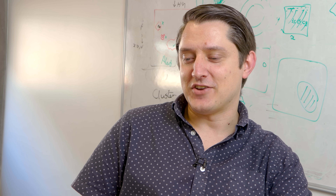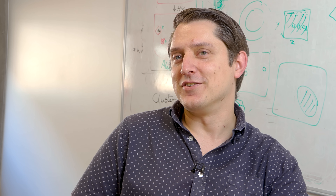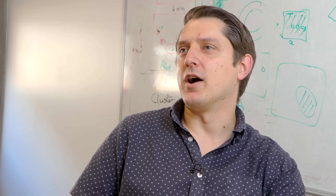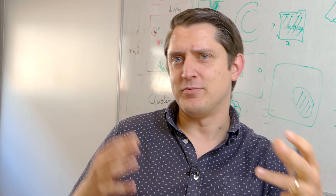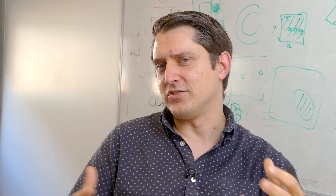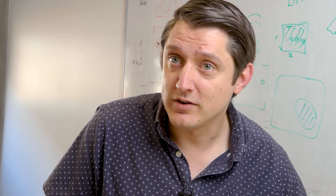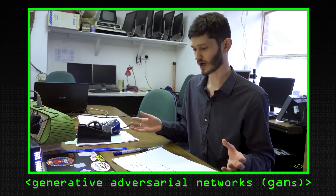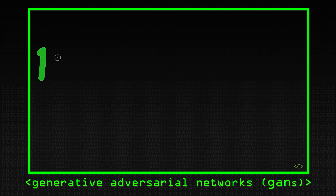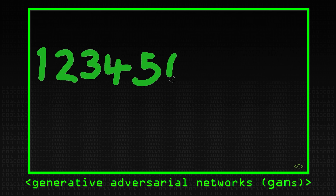I delved into this code and realised there's actually quite a lot to these things. It's not so much that they're complicated, it's just there's a lot of moving parts. So let's just have a quick reminder of generative adversarial networks, which are, before now, the standard way for generating images, and then we can talk about how diffusion is different.